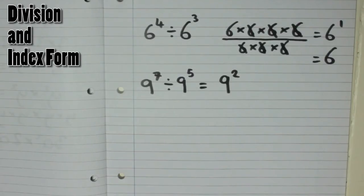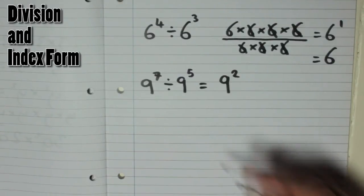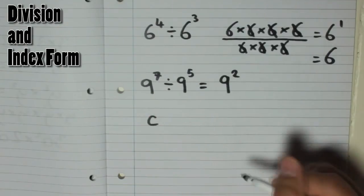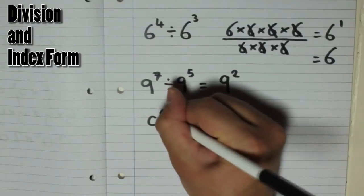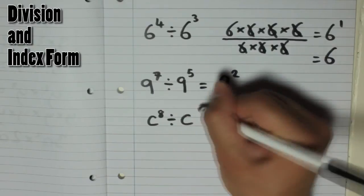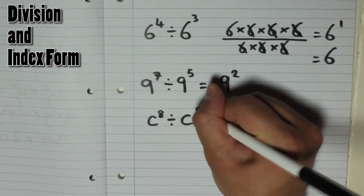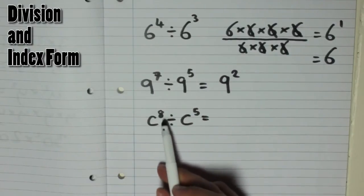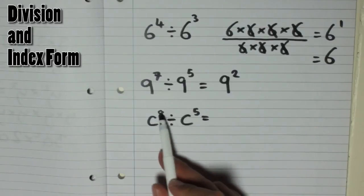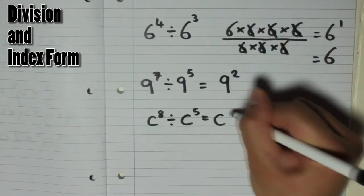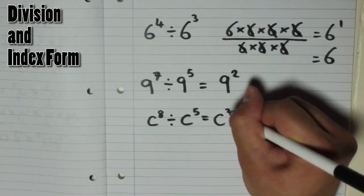You can do that with letters as well. So if we had C to the power of 8 and divide that by C to the power of 5, again you subtract the indices. 8 take away 5 is 3, so you end up with C to the power of 3.